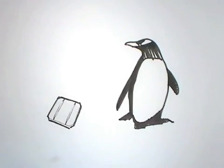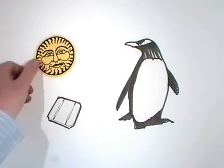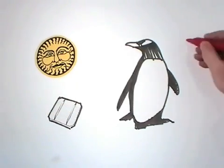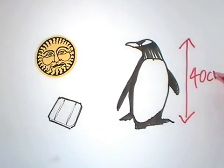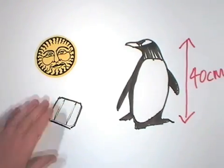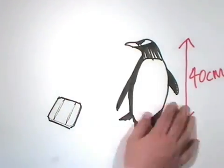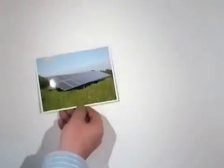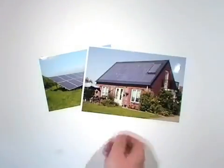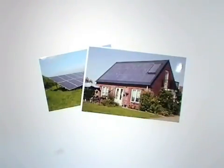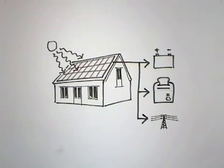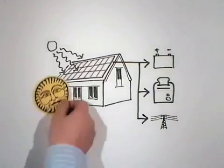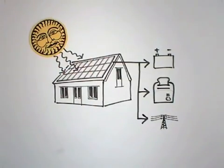This is a photovoltaic or solar cell. It's designed to convert sunlight into electricity. One cell on its own won't get you very far. They're usually set up in groups or arrays. Arrays are often mounted on buildings or set up in open spaces. The more cells you have and the more sunlight you have, the more electricity you can generate.